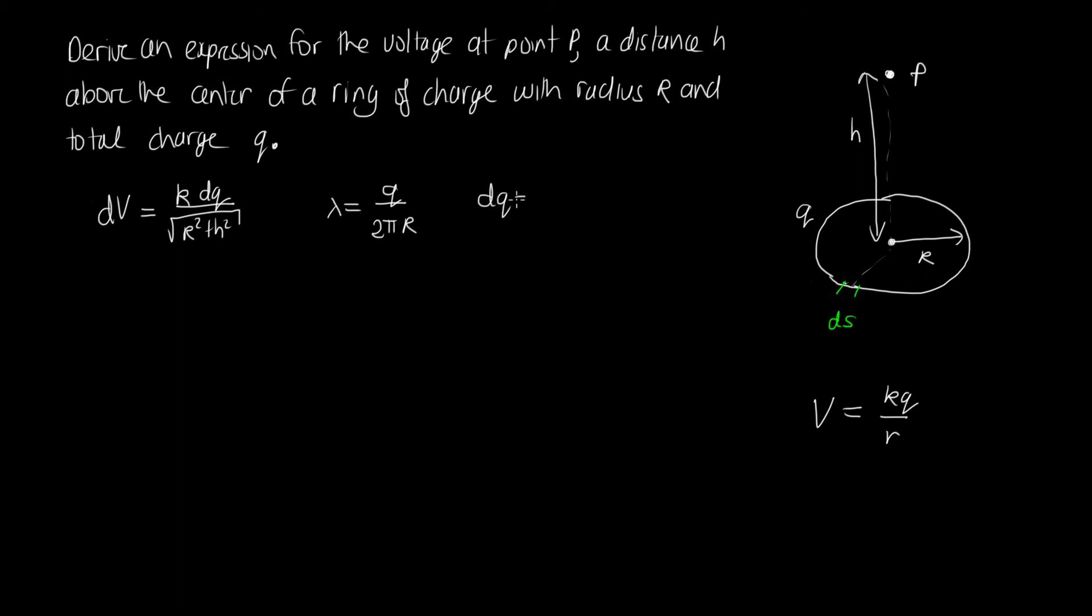And then dQ is just going to be equal to the linear charge density times the little length that we're considering. So this will be equal to q over 2πR times dS. And then we can substitute this in here.